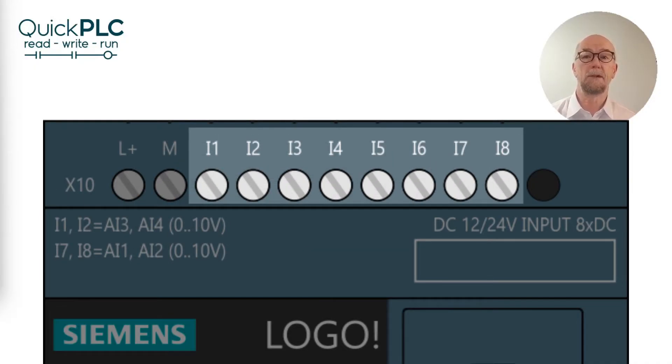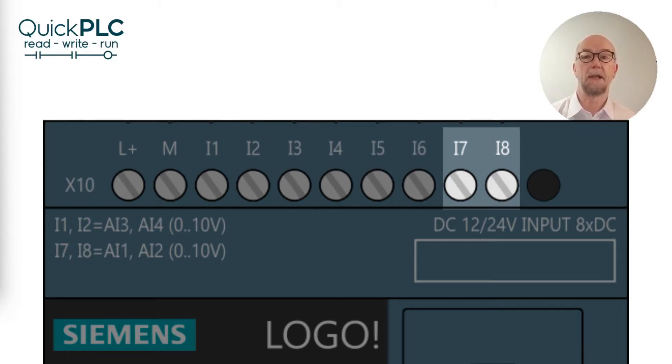With two configured, you lose i7 and i8, which are then used as analog input 1 and 2. With four configured, inputs i1 and i2 become analog inputs three and four.